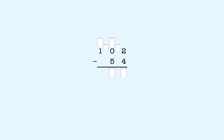We cross out the 1 to show that we took a 100. We don't need to put anything here because there are no hundreds left. We put a 1 here to show that we made 10 tens. Now we can take a 10 from the tens place to make 10 ones. We cross out the 10 by clicking on the 0 or the 1, and we put a 9 here to show we have 9 tens left.